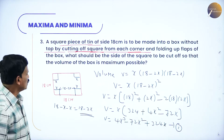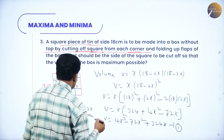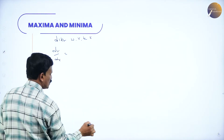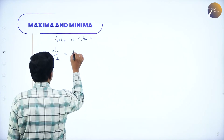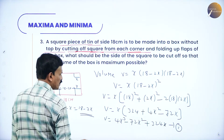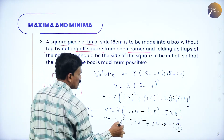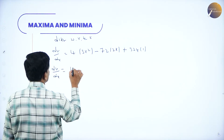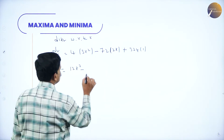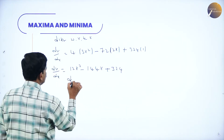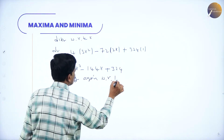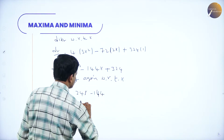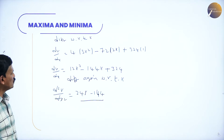Differentiating with respect to x: dv/dx equals 4 times 3x² minus 72 times 2x plus 324, which equals 12x² minus 144x plus 324. Differentiating again: d²v/dx² equals 24x minus 144.